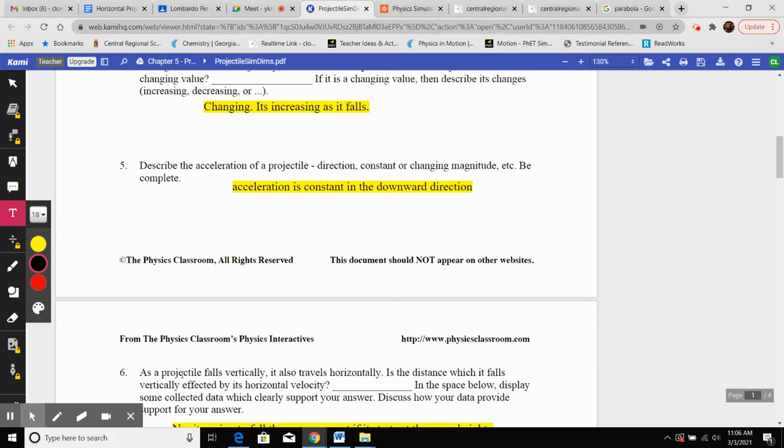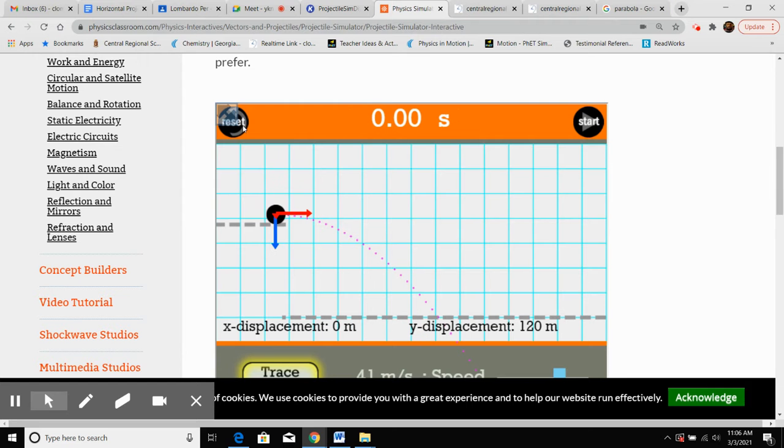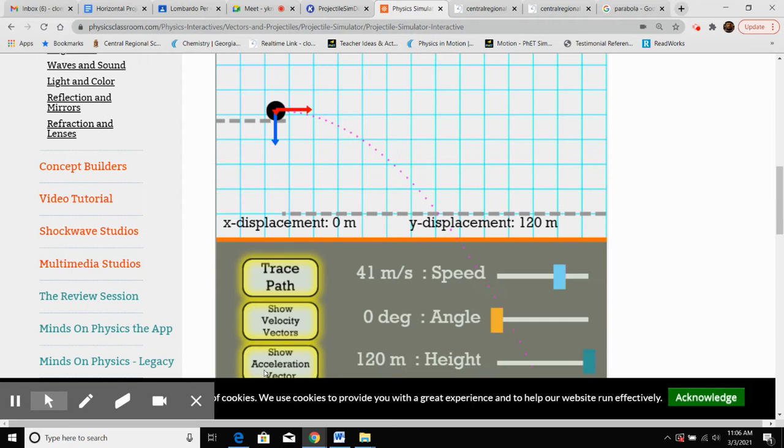So our acceleration is constant, and it's in the downward direction. Next thing would be, as the projectile falls vertically and it travels horizontally as well, is the distance which it falls vertically, is that affected by the horizontal velocity? So let's turn off acceleration and let's change the speed. Let's start with a very low speed, 6 meters per second.